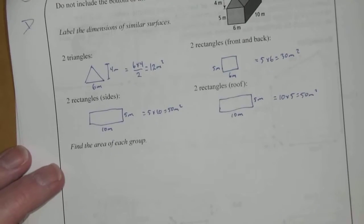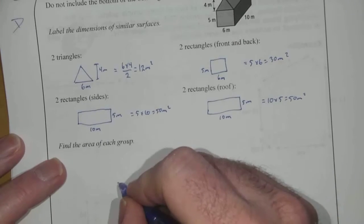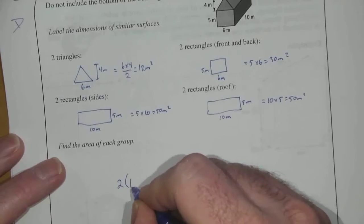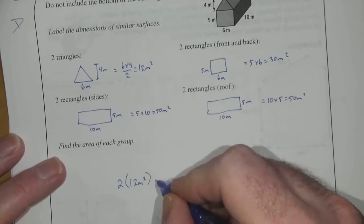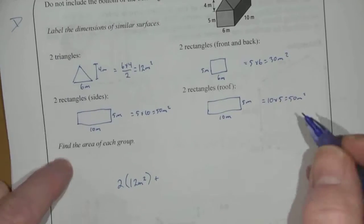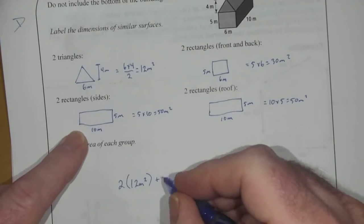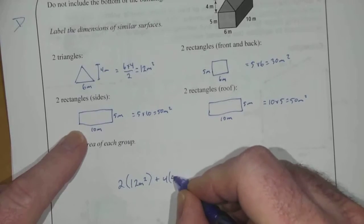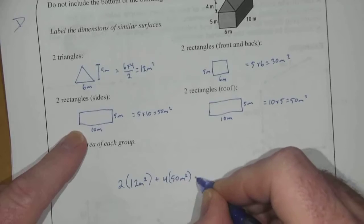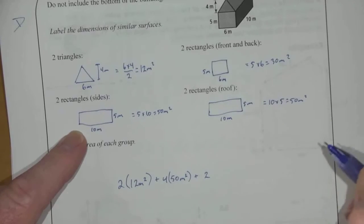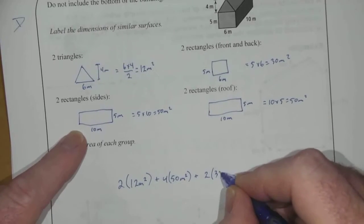So the total surface area then is 2 of the triangle at 12 meters squared, plus, so we've got 4 rectangles in total that are 50 meters squared, plus we've got the two ends that were 30 meters squared.